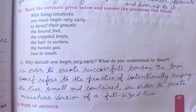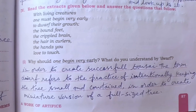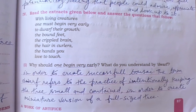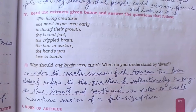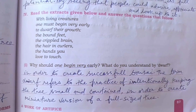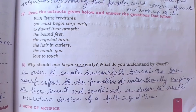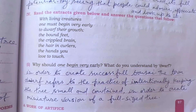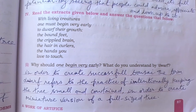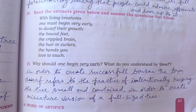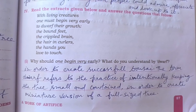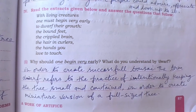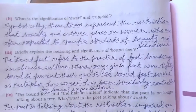Extract four. Question one: why should one begin very early, and what do you understand by 'dwarf'? The answer is: one should begin very early in order to create a successful bonsai tree. The term 'dwarf' refers to the practice of intentionally keeping the tree small and contained in order to create a miniature version of a full-sized tree.